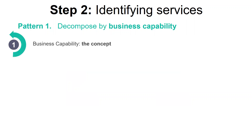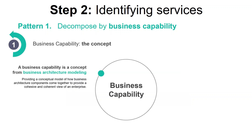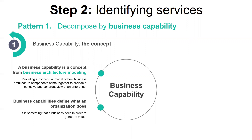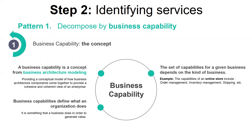As a concept, the origins of the business capability came from business architecture modeling. The business architecture model provides a conceptual model of how the business architecture components come together to provide a cohesive and coherent view of an enterprise. For more details about the business architecture models, I invite you to take a look at the link I put in the description. The business capability is something that a business does in order to generate value, and the set of capabilities for a given business depends on the kind of business.